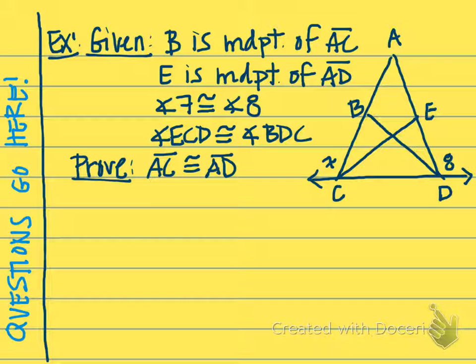Let's try an example. If you take a look at this picture, depending on how you look at it, you can count up to about 8 triangles. Since this whole chapter is about congruent triangles for the most part, we know we're going to need some triangles that could possibly be congruent. But how do we know which ones to look at?